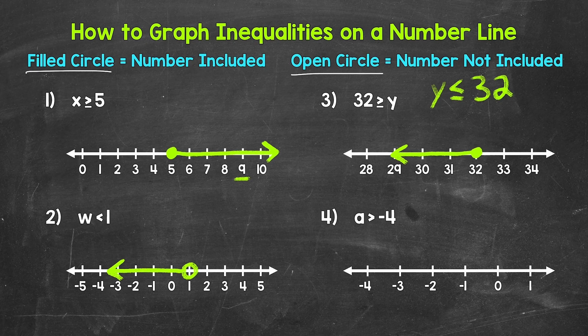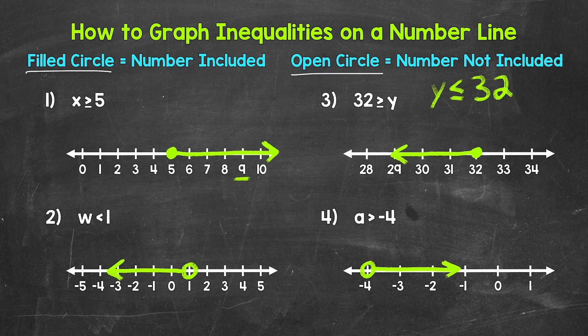Lastly, let's move on to number four, where we have a is greater than negative four. Let's start at negative four. Negative four is not a solution — it's not included — so we need an open circle at negative four. Now we need to draw an arrow pointing to the right, the direction of all of the numbers greater than negative four. And now our inequality is graphed on the number line. The open circle shows that negative four is not included, and then the arrow represents all of the numbers greater than negative four — all of the solutions.